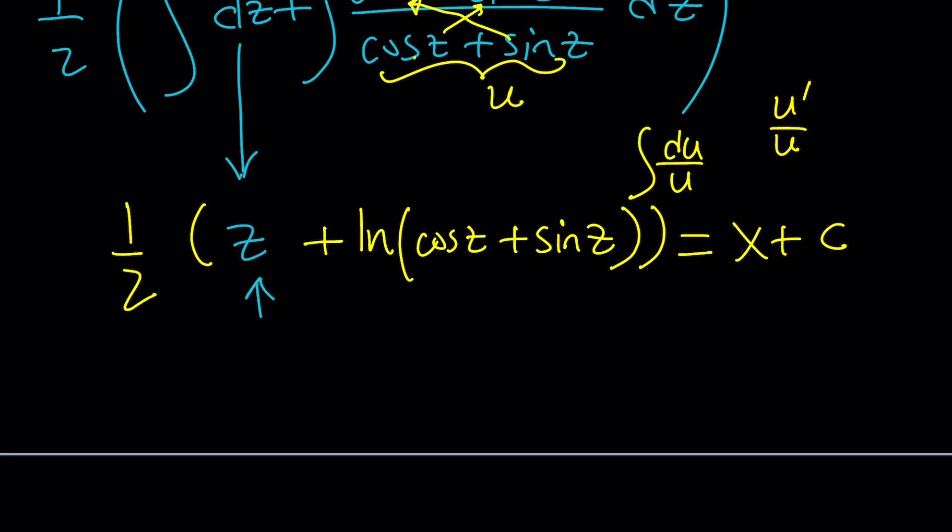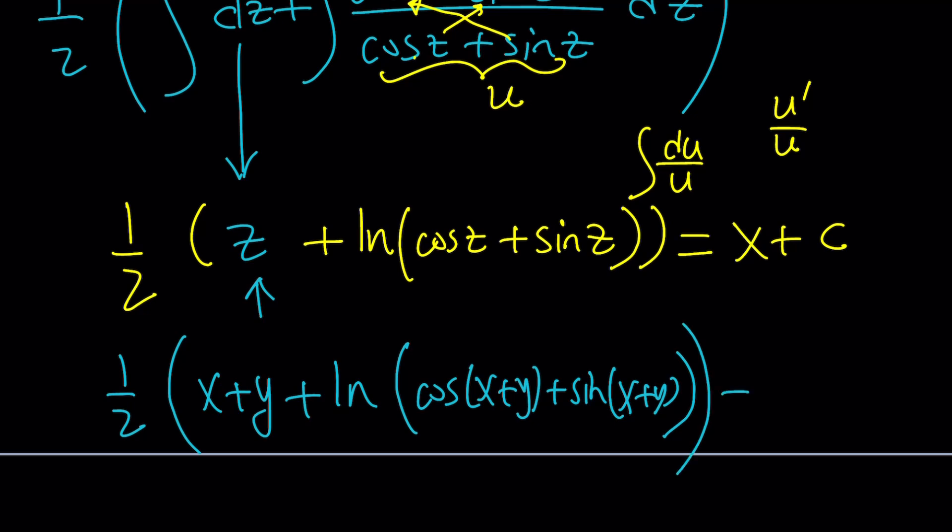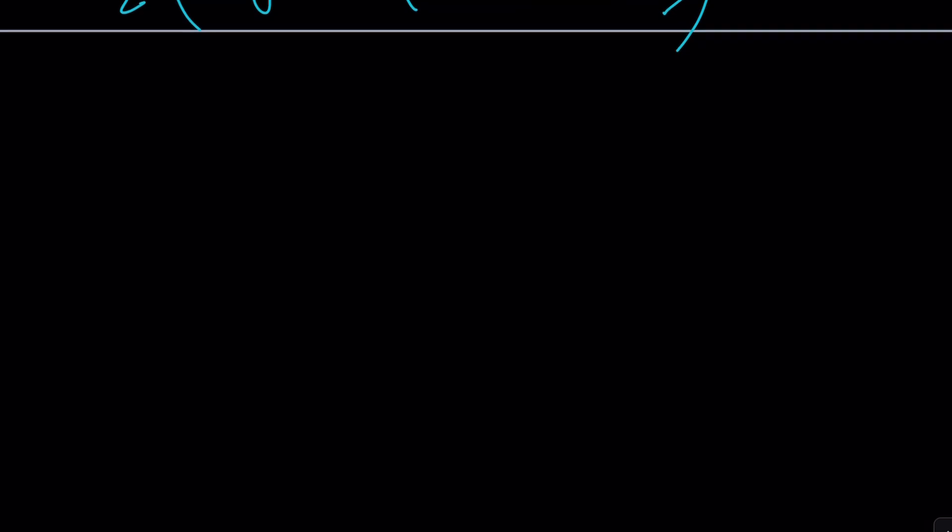What is z? z is x plus y. So we're going to write it as one half of x plus y plus ln cosine of x plus y plus sine of x plus y. You have to align the sum and then add x plus y to it. And then multiply the whole thing by one half equals x plus c. I don't think you can solve for y, but that should be the answer.